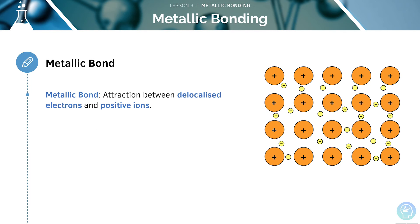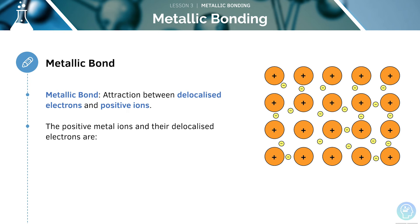A metallic bond is the attraction between delocalised electrons and positive ions. A metal consists of lots of positive metal ions and their delocalised electrons. The ions will be packed closely together in a regular arrangement.